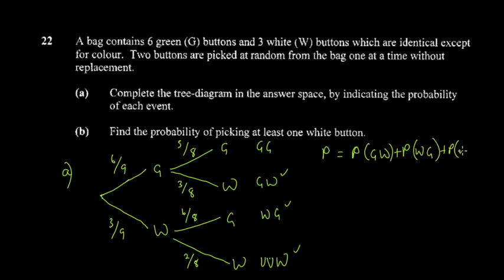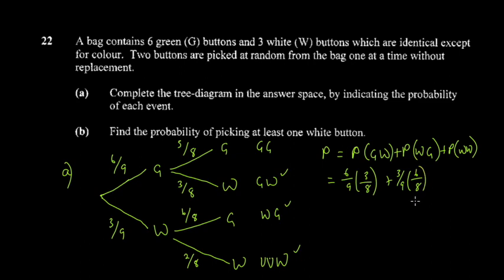P(at least one white) = P(GW) + P(WG) + P(WW). P(GW) = 6/9 × 3/8. P(WG) = 3/9 × 6/8. P(WW) = 3/9 × 2/8.